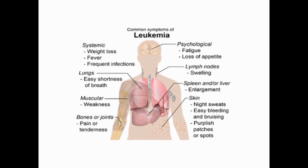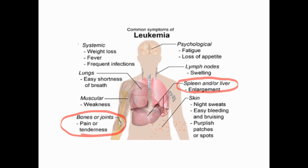Key symptoms of leukemia include splenomegaly and organomegaly, multiple bone pain and bony tenderness, systemic symptoms like weight loss and fever, frequent infections. If platelets are reduced, patients get red patches on the skin, easy bruising, purpuric spots, and multiple enlarged lymph nodes.